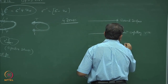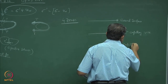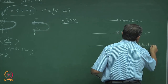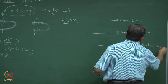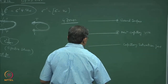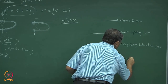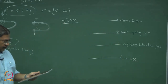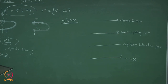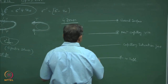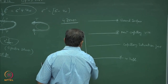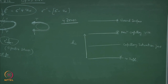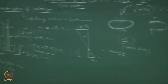This is the capillary saturation zone, and somewhere here the water table is. This is what I have defined as Hc. In some books you will find this Hc as Hc max also.